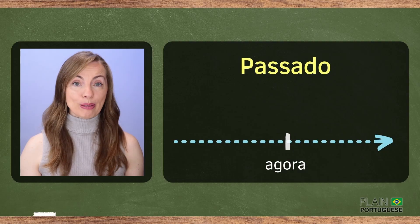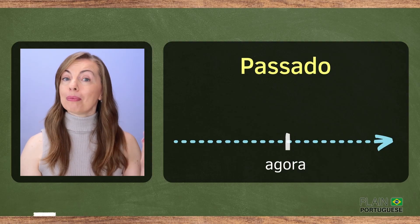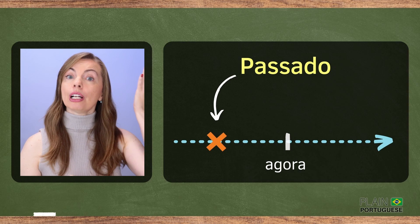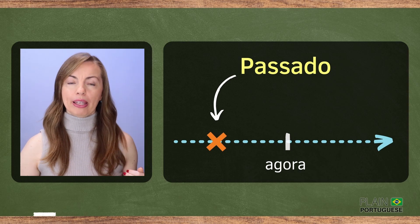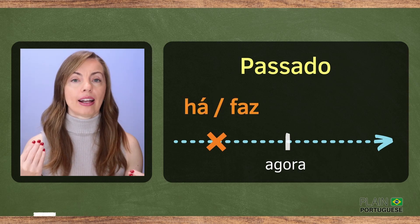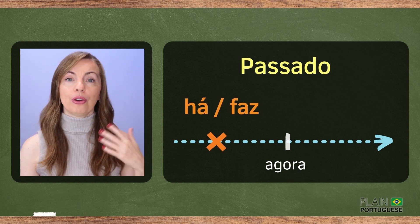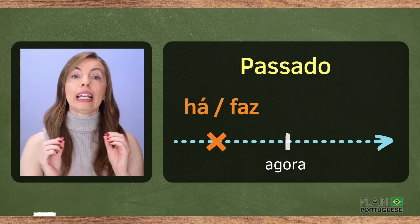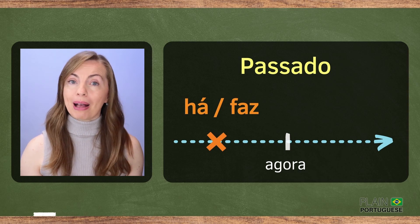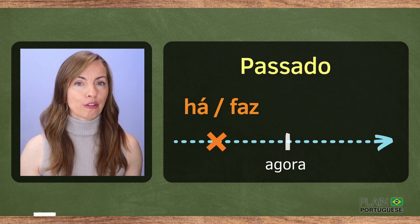Let's begin by talking about the past. If you want to say how long ago something happened, you can use either há or faz in combination with the verb in the past tense.